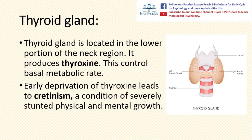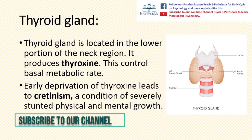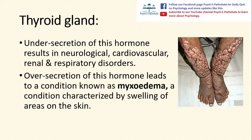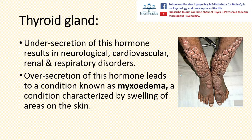The next gland is the thyroid gland, located in the lower portion of the neck region. It produces the thyroxine hormone, which is responsible for the maintenance of basal metabolic rate. Early deprivation of thyroxine leads to cretinism, a condition of severely stunted physical and mental growth. Undersecretion of this hormone results in neurological, cardiovascular, renal, and respiratory disorders. Oversecretion of this hormone leads to a condition known as myxedema, characterized by swelling of areas on the skin.